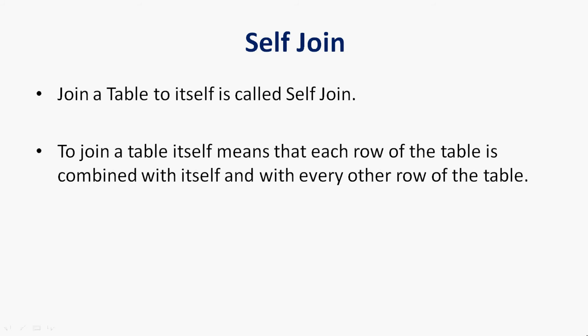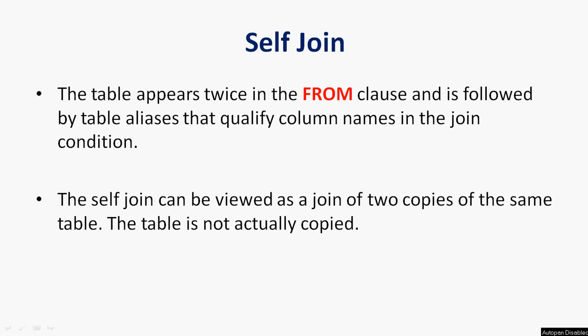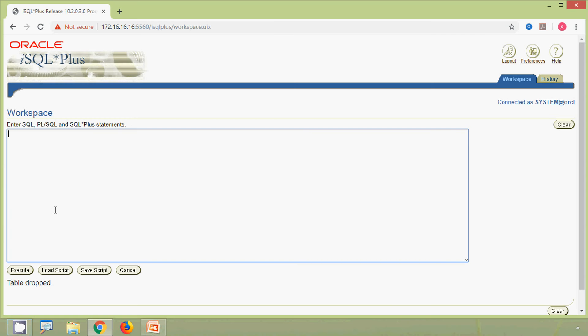First of all we will see what is self join. Joining a table to itself is called a self join. To join a table to itself means that each row of the table is combined with itself and with every other row of the table. The table appears twice in the FROM clause and is followed by table aliases that qualify column names in the join condition. The self join can be viewed as a join of two copies of the same table — the table is not actually copied.